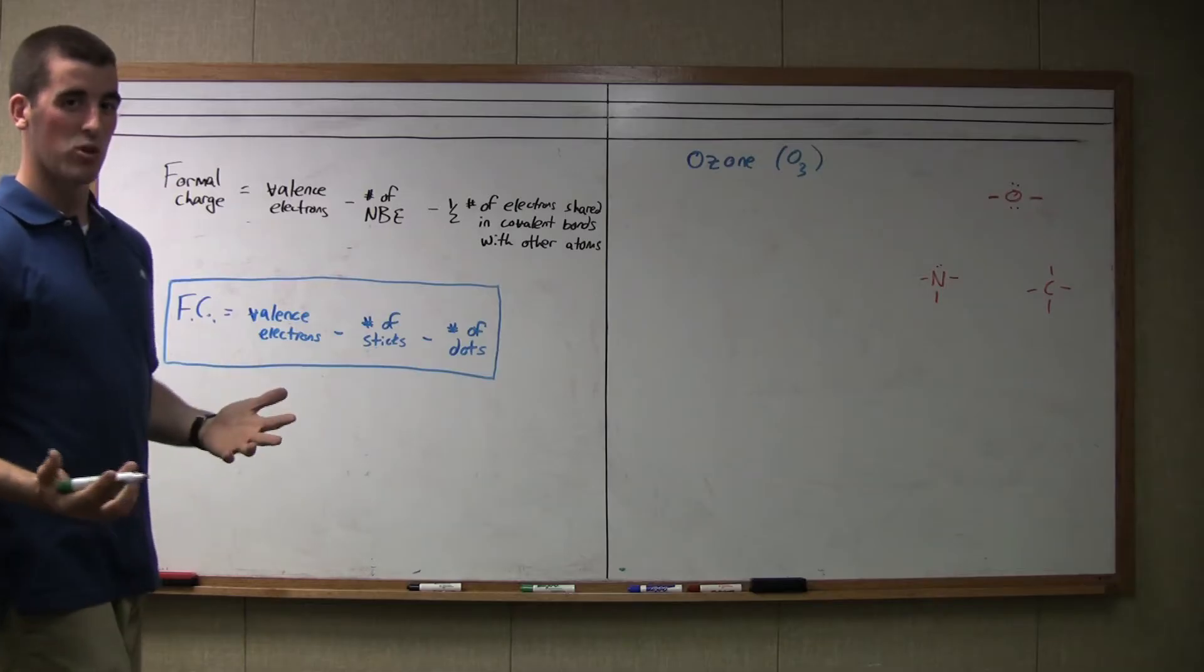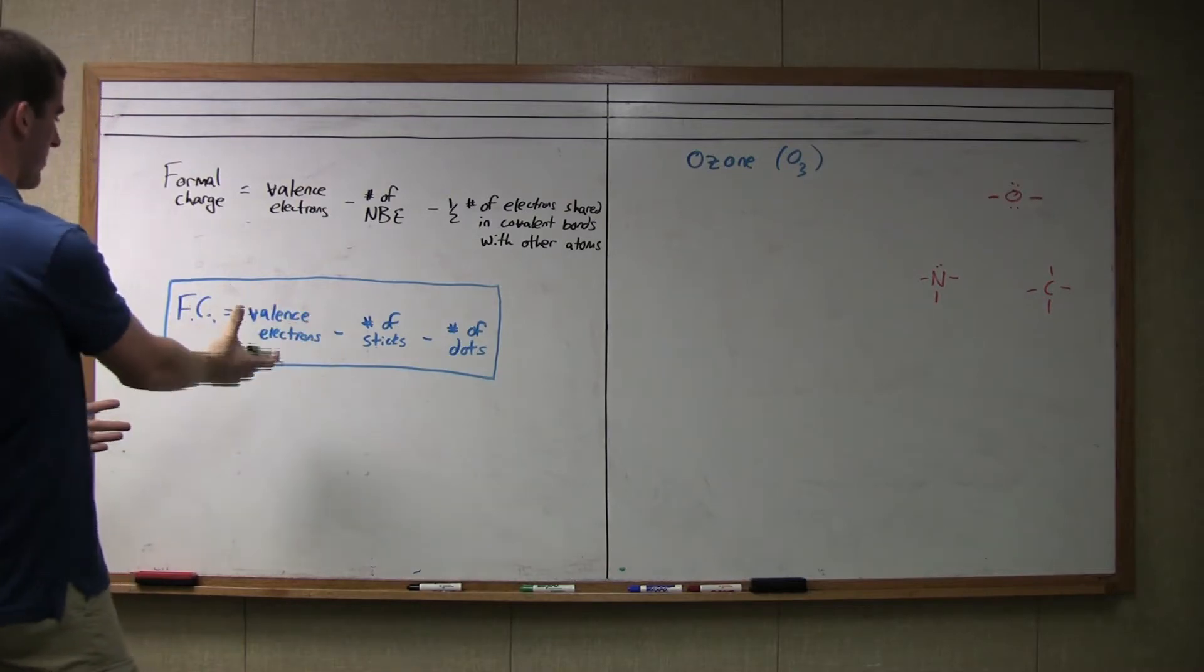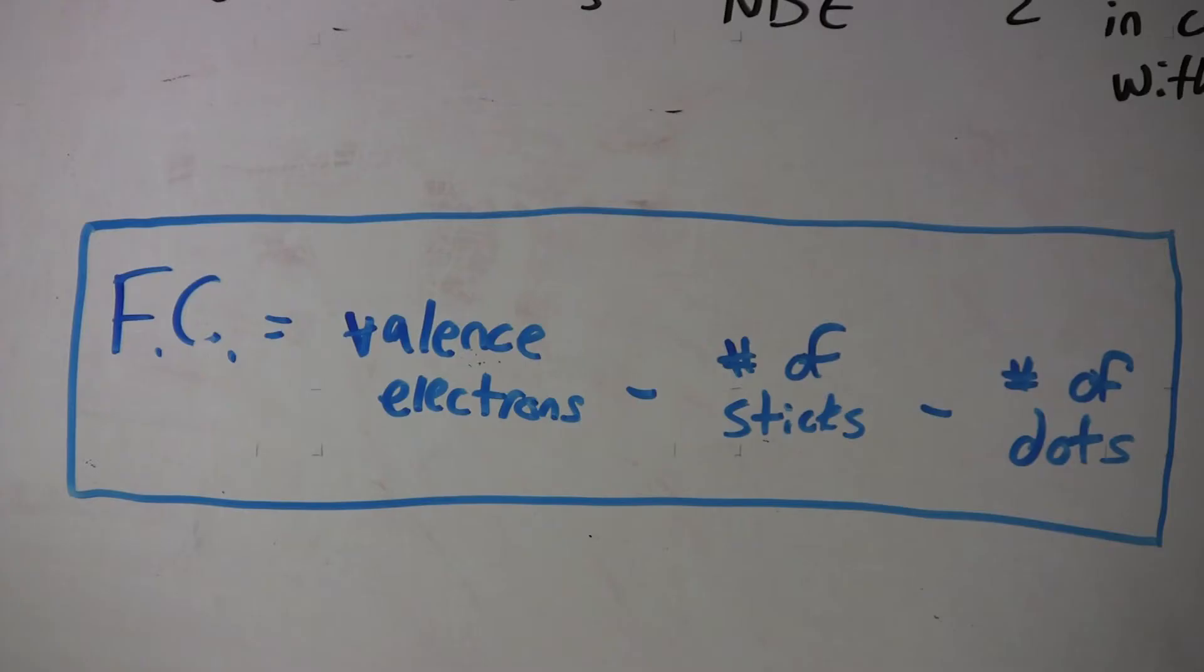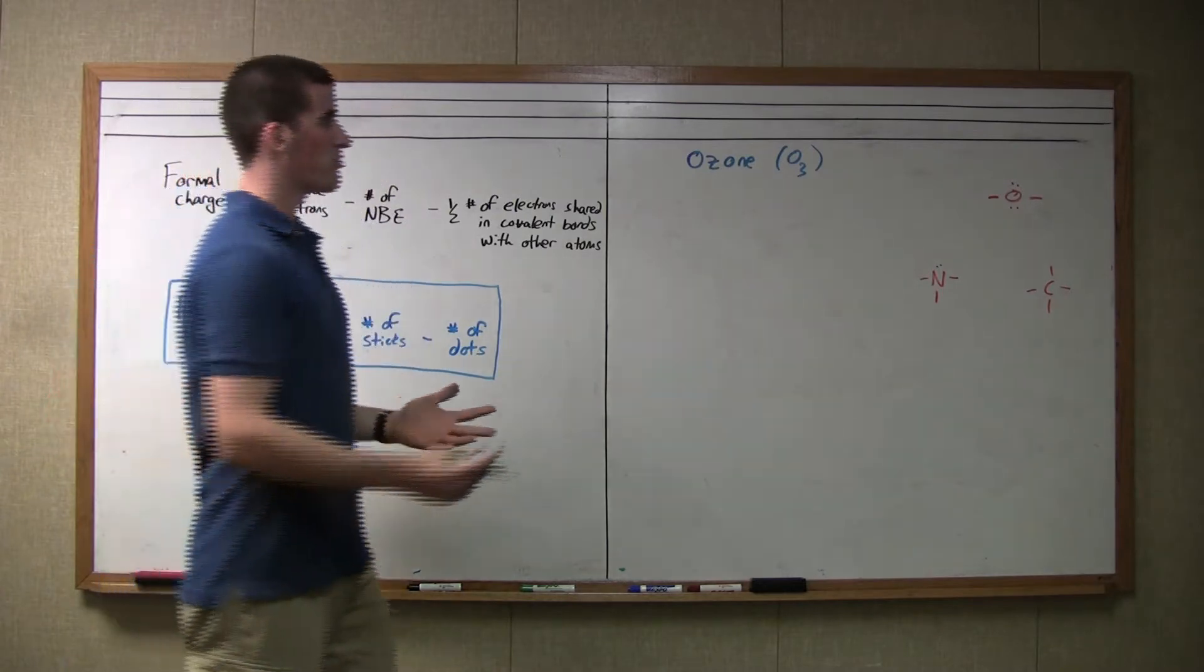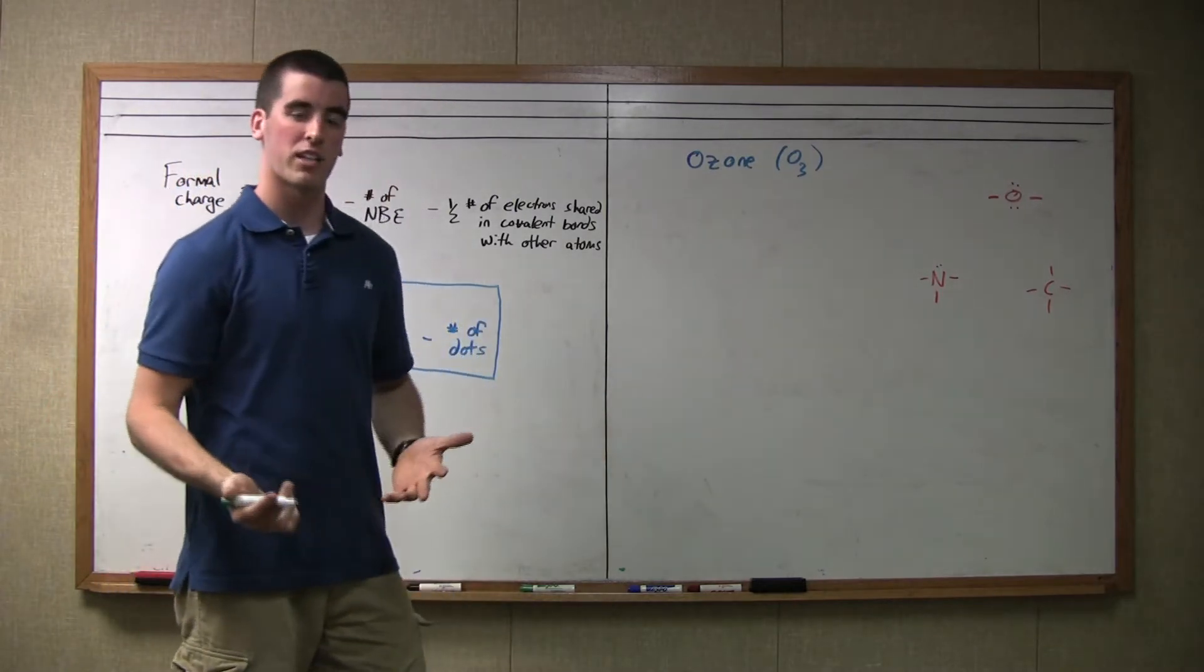We think that's kind of wordy, and so a simpler way to think about it is this equation here: formal charge equals valence electrons minus number of sticks minus number of dots. Let me explain. When we draw structures in Lewis structures, we draw bonds as sticks and non-bonding electrons as dots.